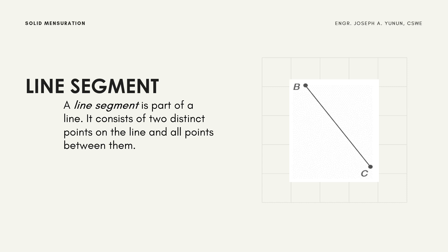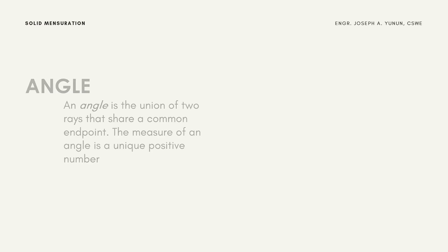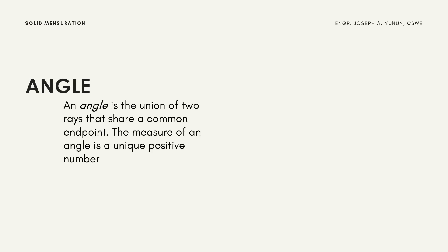An angle is the union of two rays that share a common endpoint. The measure of an angle is a unique positive number. As shown in the figure, angle A, or angle 1, can also be called angle ABC, and it is always a positive unique number.